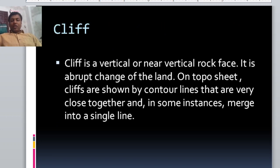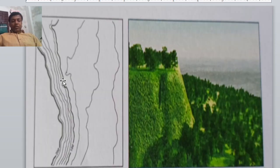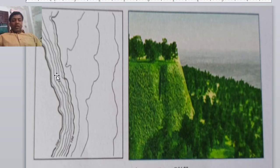Cliff is a vertical or near vertical rock face. It is an abrupt change of the land on topo sheet. Cliffs are shown by Contour Lines that are very close together and in some instances merge into single lines like that. As you see in this picture, these contour lines are definitely very near, very close to each other. And the landscape you see in this picture is definitely a rock face structure and actually it is a cliff.